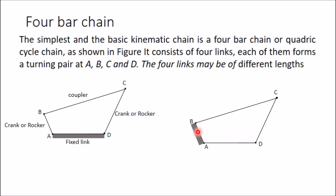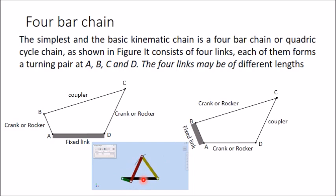If you fix AB, you get a different mechanism. In this case, the link opposite to the fixed link is DC, so DC is the coupler, and BC and AD will be either crank or rocker. In this example, the black link is fixed, the green link has complete rotational motion and is the crank, the link opposite the fixed link is the coupler, and the oscillating link is the rocker or lever.